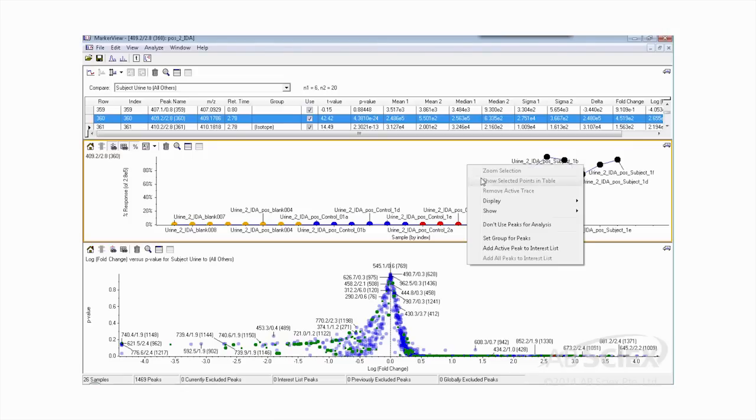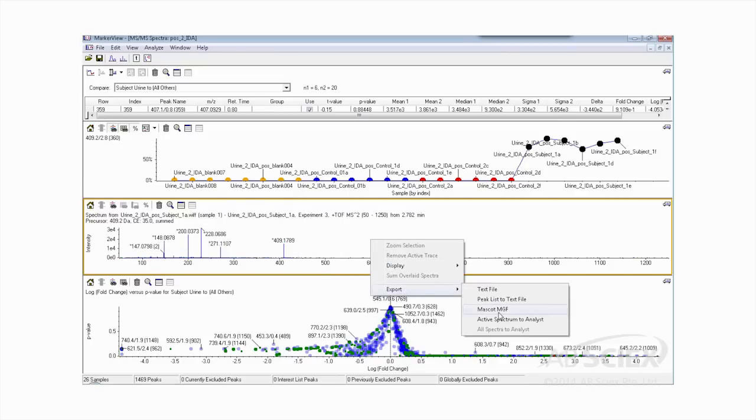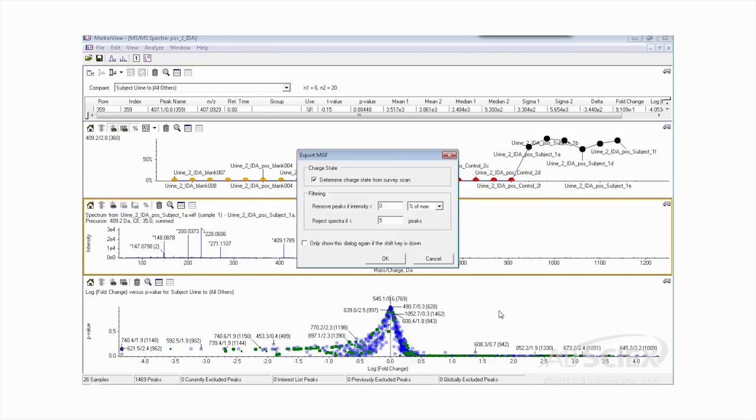As you can see, the groups are well differentiated and we can use the PCA plot to further identify the variables responsible for this difference. MS-MS data is linked in MarkerView for exporting to online database searching, such as the Human Metabolome Database and MassBank.